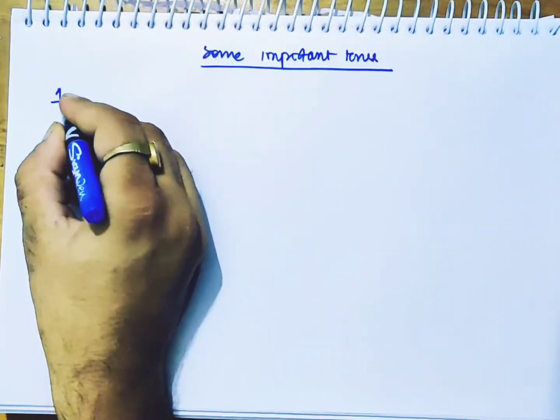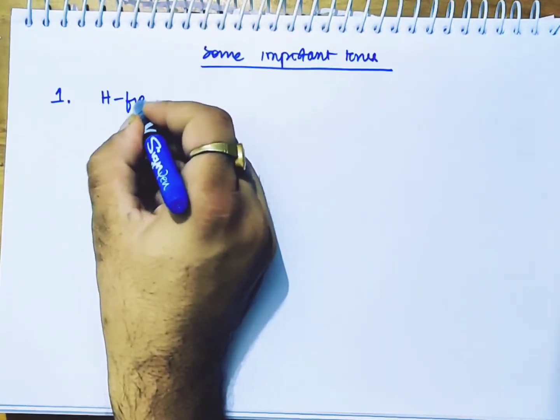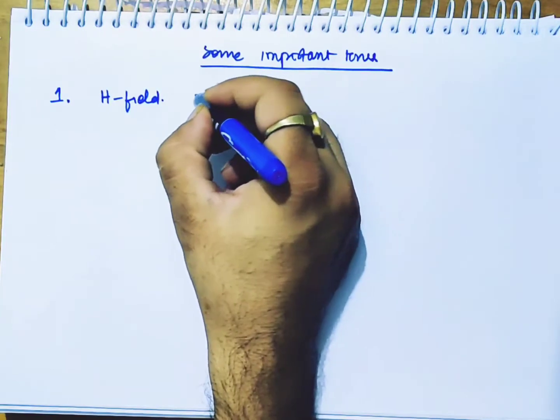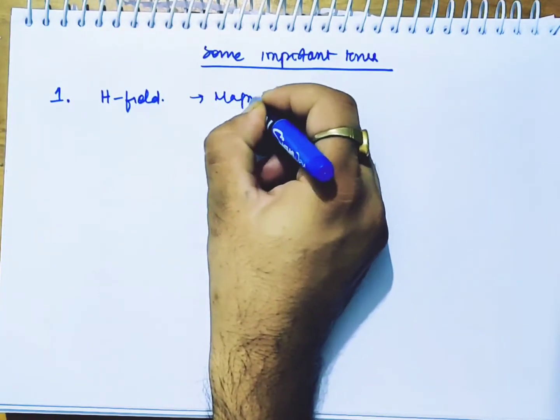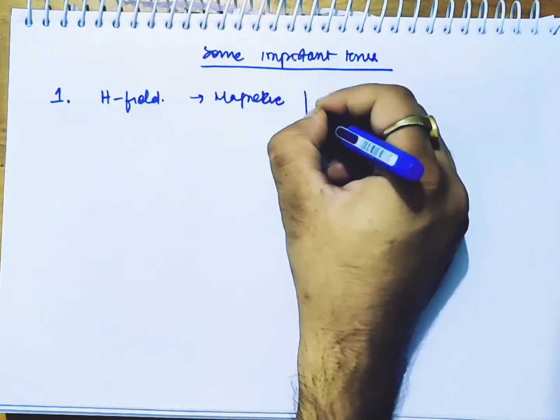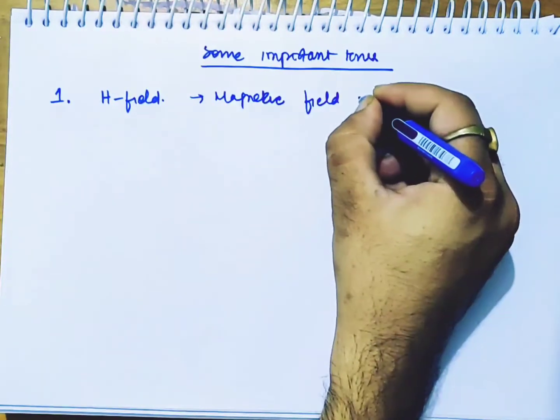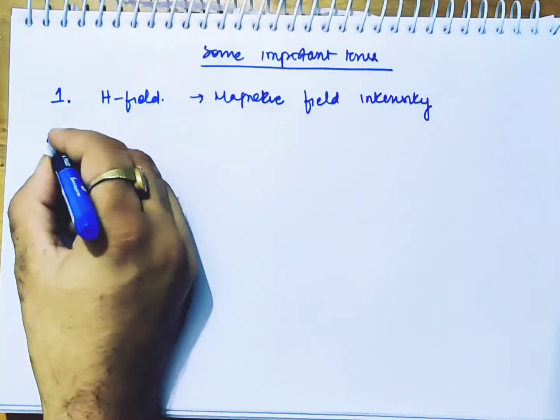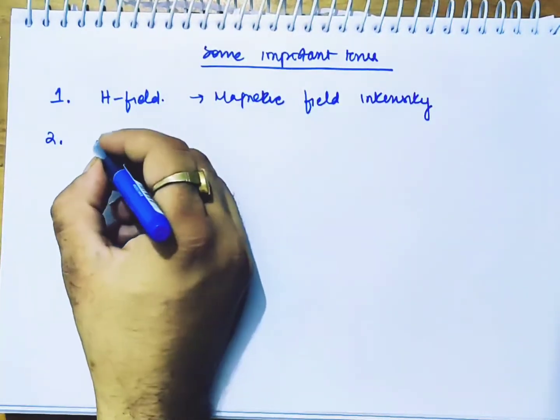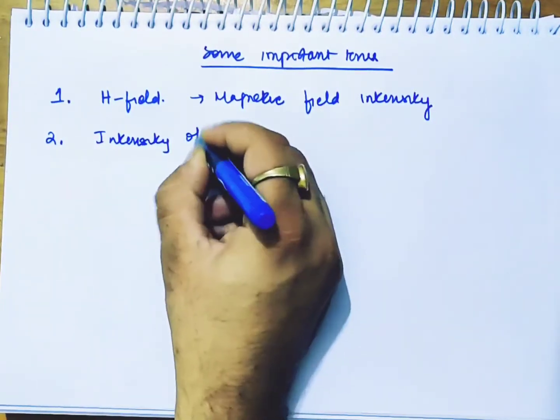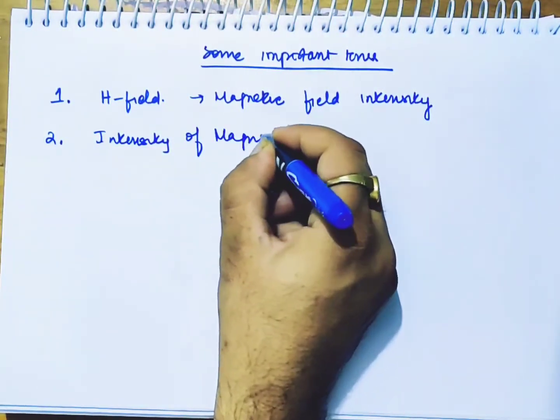The first term will be H-field, which is magnetic field intensity. Another term will be intensity of magnetization.